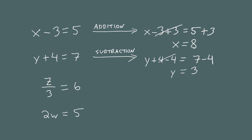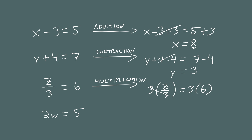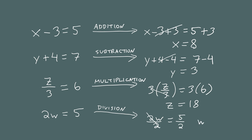For the equation z divided by 3 equals 6, to undo the division by 3 on the left, you use multiplication. If you multiply both sides by 3, the 3's cancel on the left, giving you z equals 18. And on the bottom equation, 2w equals 5, to undo the multiplication by 2 on the left-hand side, you use division. The 2's cancel on the left, giving us w equals 5 halves.